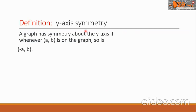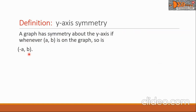Now for y-axis symmetry, let's have this definition. A graph has symmetry about the y-axis if whenever (a, b) is on the graph, so is (-a, b).